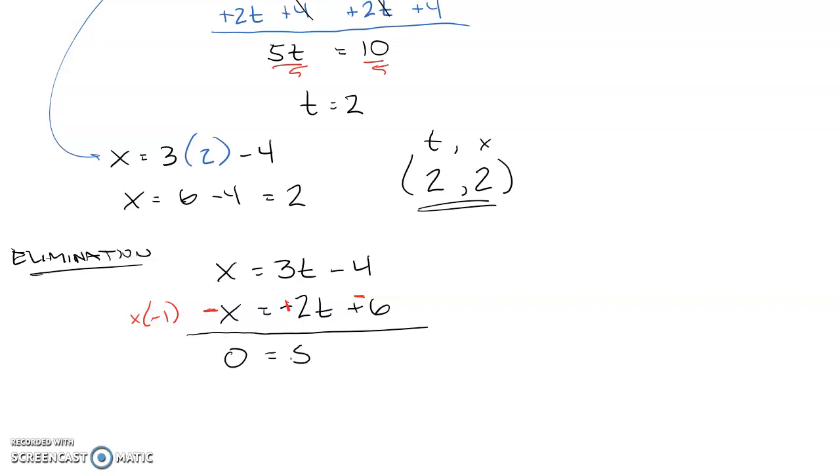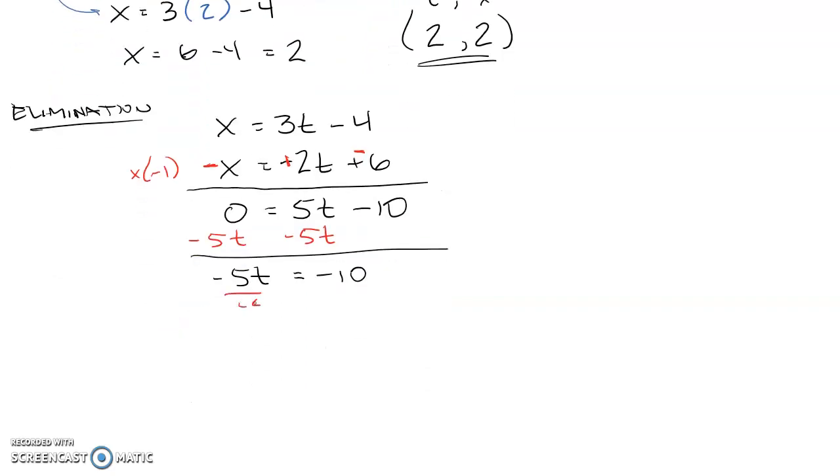I get 0x and 5t, negative 10. Now it's an algebra step. I can divide by negative 5 on both sides. And once again, I get t to be 2.